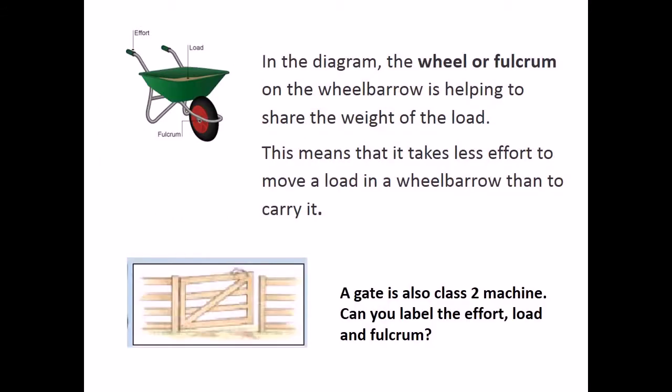In the diagram, the wheel or fulcrum on the wheelbarrow is helping to share the weight of the load. This means that it takes less effort to move a load in a wheelbarrow than to carry it. A gate is also class 2 machine. Can you label the effort, load and fulcrum?